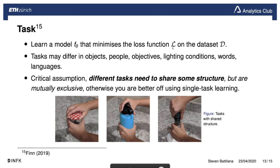Let's define what a task is. During this presentation, a task comprises a task-specific loss function and a task-specific dataset, which together are used to learn a model with hyperparameters theta. Tasks can differ in objects, but a critical assumption in meta learning is that tasks share some common structure — without that shared structure, meta learning doesn't work and we'd be better off with single-task learning.